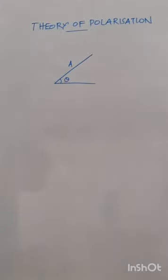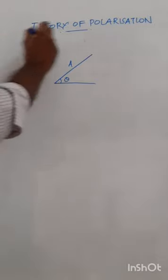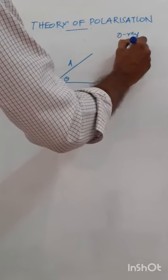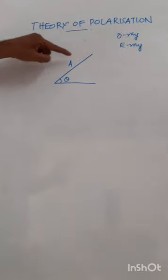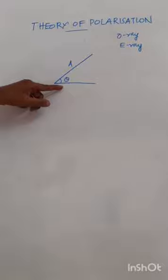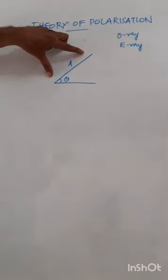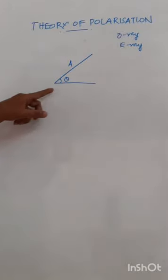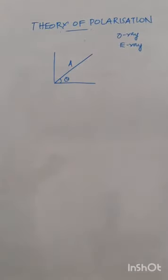This will be the direction of the optic axis of the crystal. We are taking a birefringent crystal, which means that when a ray of light falls on the birefringent crystal it gets split into two — that is an ordinary ray and an extraordinary ray. A is the amplitude of the incident light and this amplitude makes an angle theta with the optic axis.